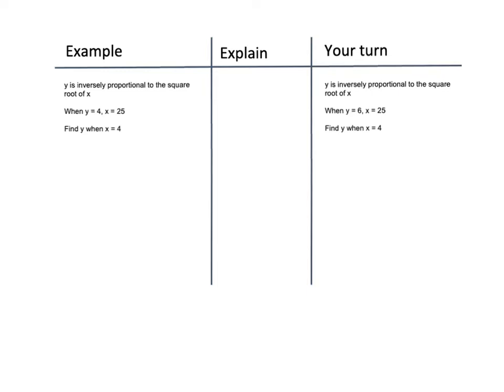If one is multiplied by 9, the other one would be divided by 3. One variable is inversely proportional to the square root of the other. We're going to follow very much the same pattern as before. The first thing we do is we write out what we are doing in mathematical notation.